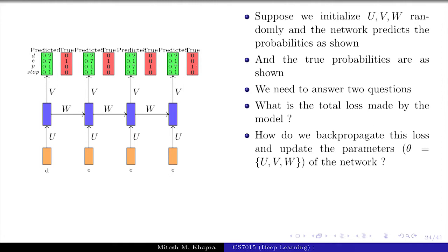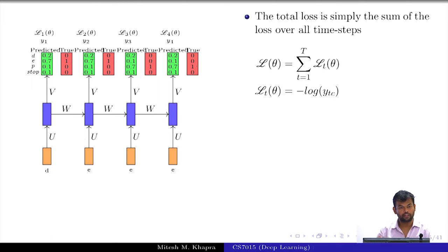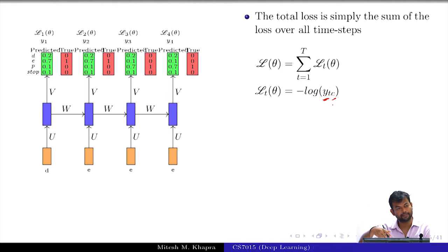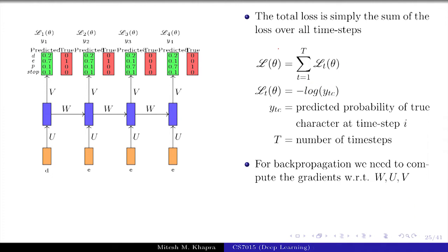The total loss is just going to be the sum of the loss over all time steps — very logical. The loss at every time step t is the cross-entropy loss: L_t(θ) depends on ŷ_t and c_t, where c_t is the true class at time step t — E at the first time step, E at the second, then P, then stop. For back propagation, we need to compute the gradient of this loss function with respect to W, U, and V.